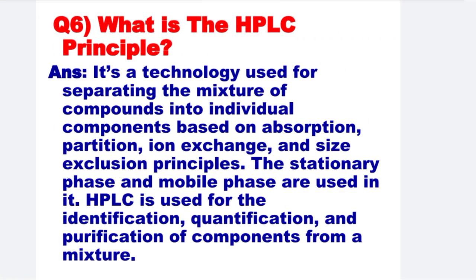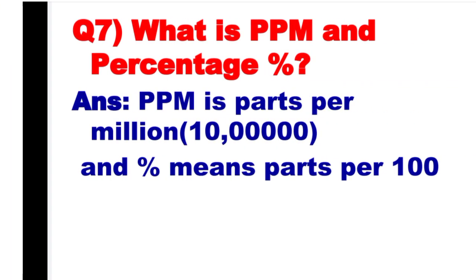Next: What is the HPLC principle? HPLC is a technology used for separating a mixture of compounds into individual components based on absorption, partition, ion exchange, and size exclusion principles. The stationary phase and mobile phase are used in it. HPLC is used for the identification, quantification, and purification of components from a mixture.